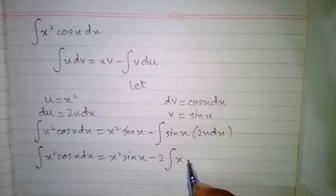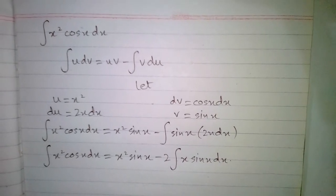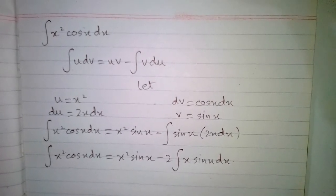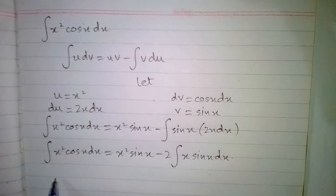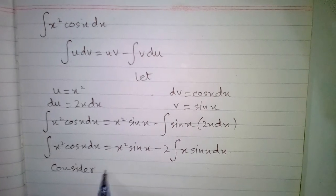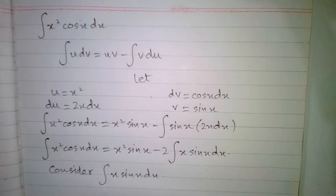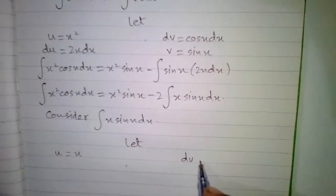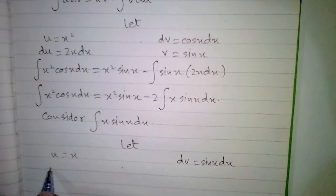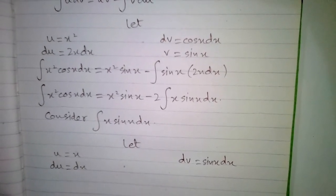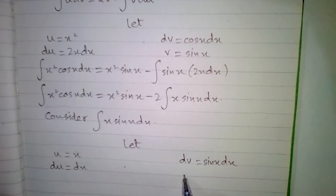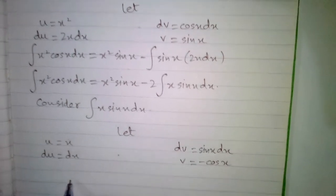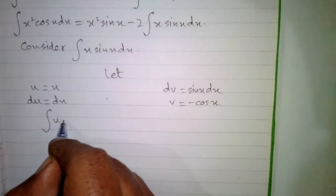In order to integrate x sin x we will use integration by parts again. Consider the integral of x sin x. Let u equal x and dv equal sin x dx. Then du equals dx, and integrating dv gives v equal to the integral of sin x, which is minus cos x.